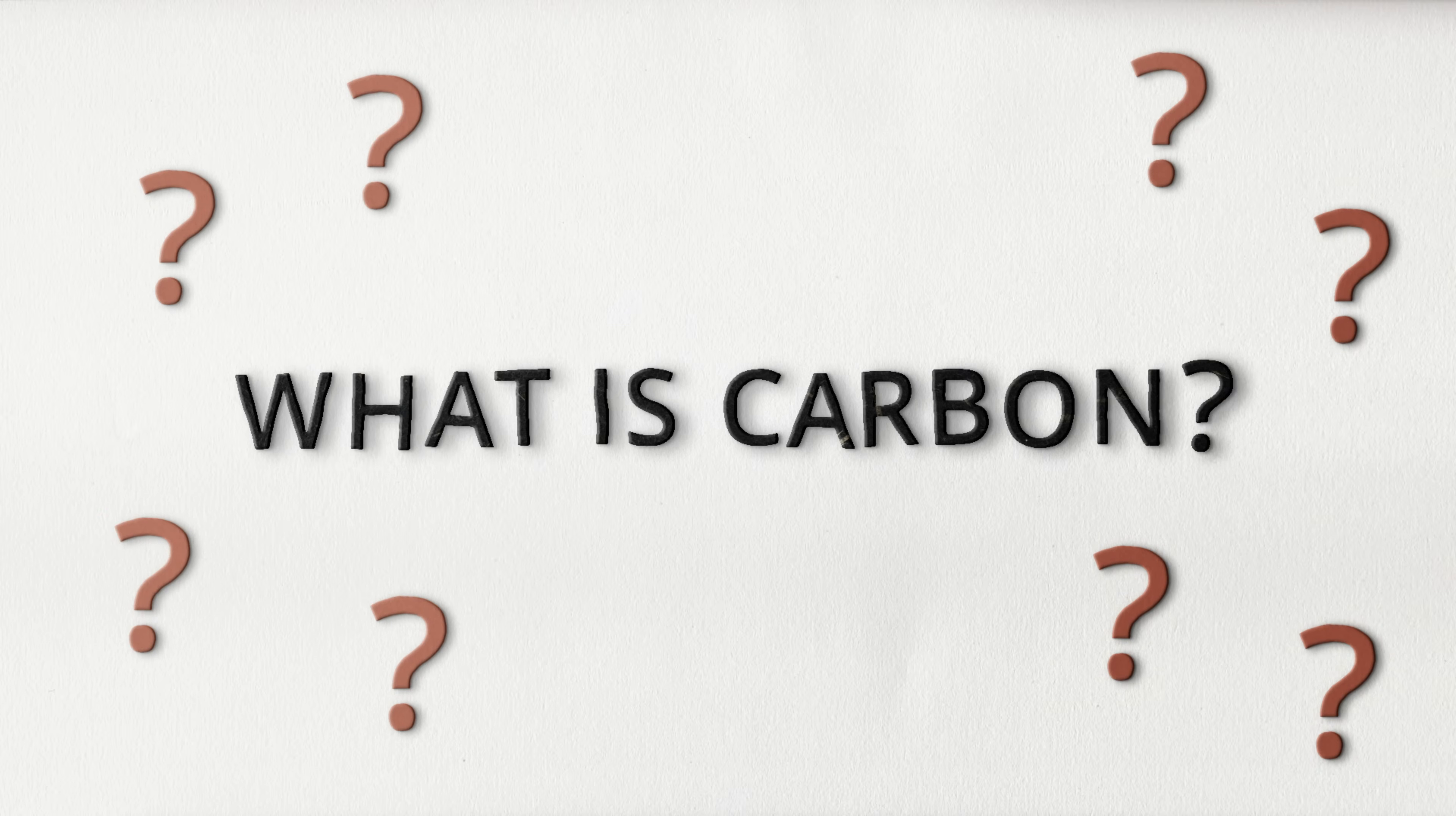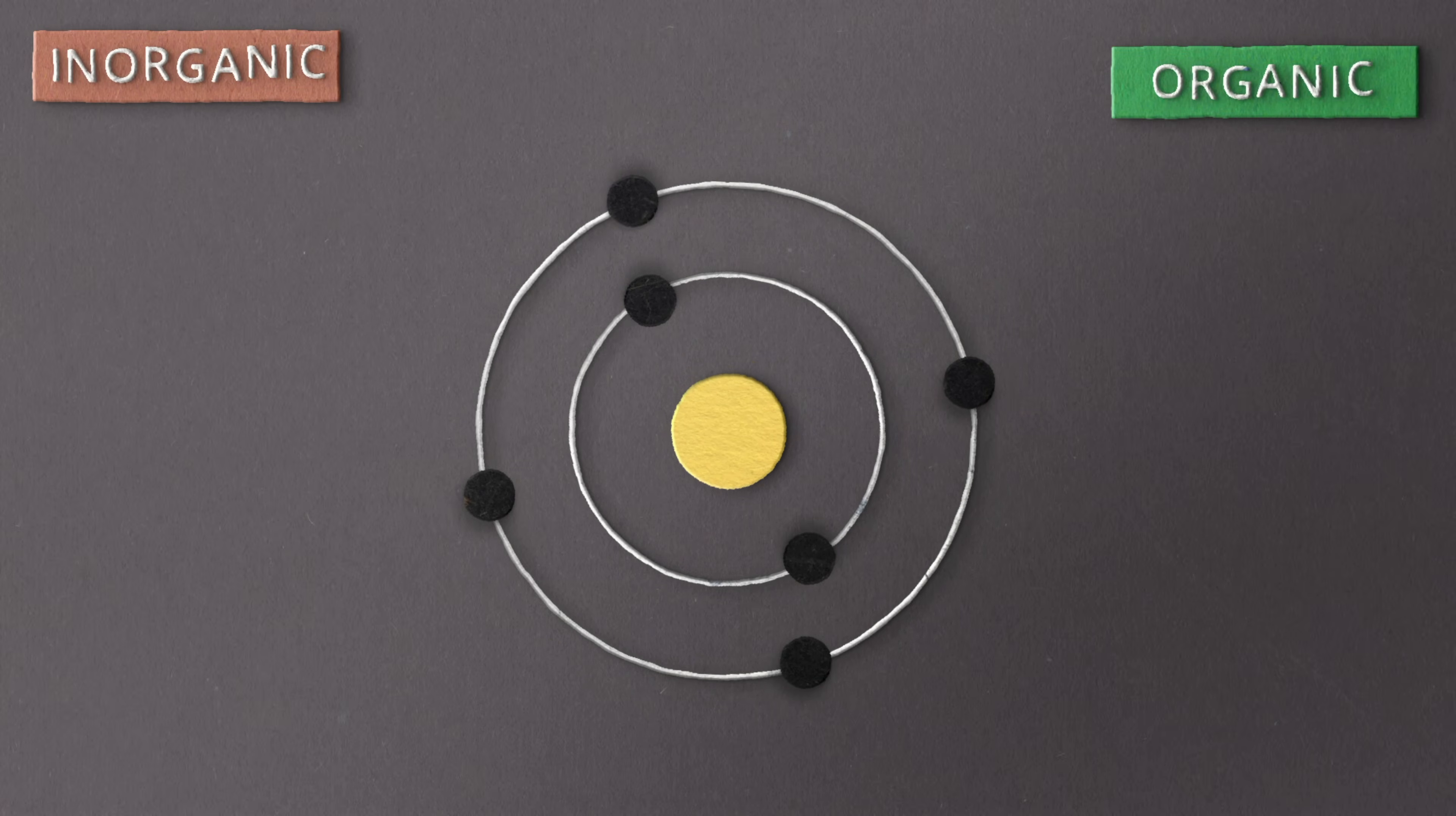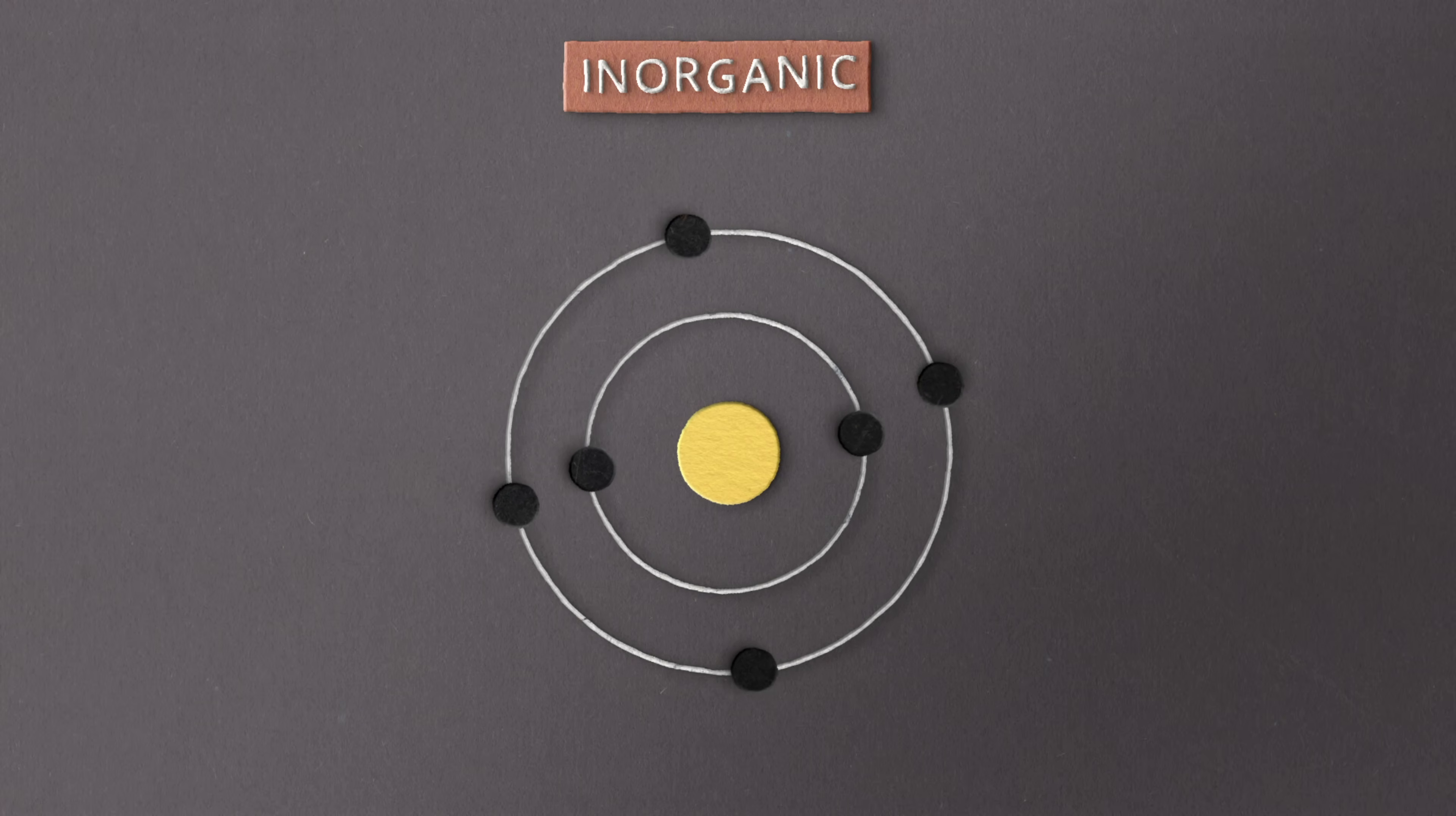To understand what a carbon-based molecule is, we need to meet carbon first. Carbon is an inorganic and organic atom. It is inorganic when found in some carbon-based substances that you probably are familiar with, like coal, petroleum, diamonds,